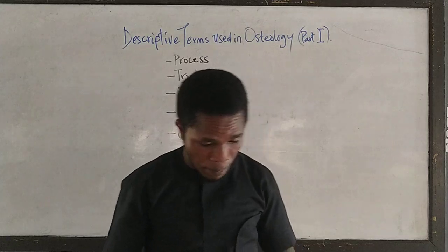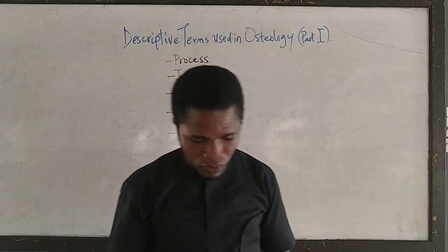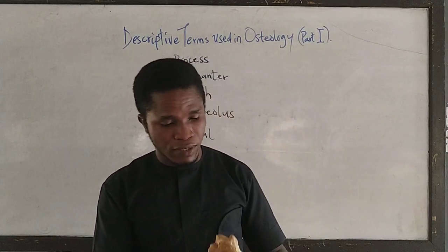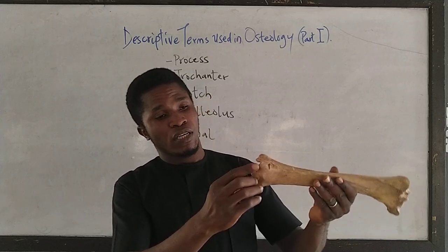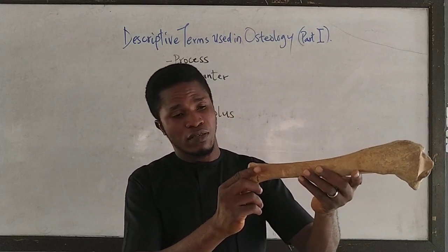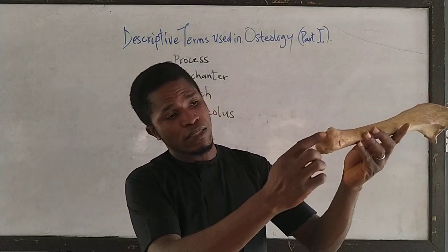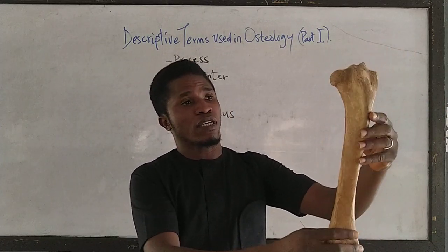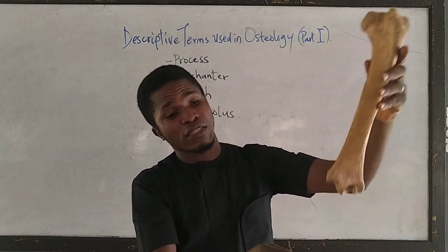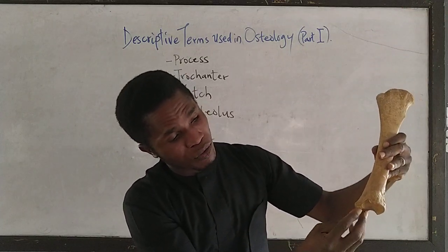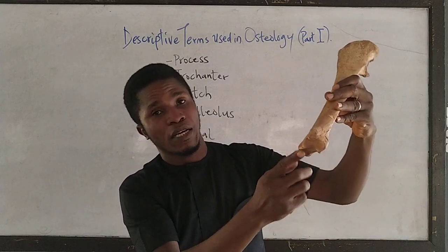The next term is the malleolus. A malleolus is a round or bony prominence found at the edge of the tibia, though it can be in other bones as well. Looking at this tibia, we have the lateral side and the medial aspect. On the lateral side is the lateral malleolus, while on the medial side is the medial malleolus.